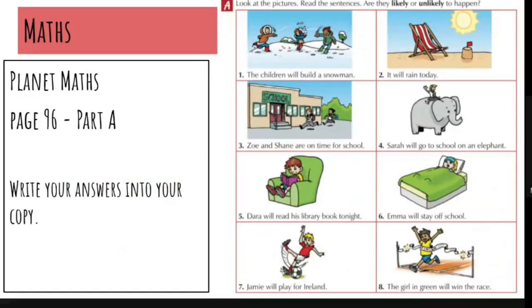Then you have to go on to page 96 and you're going to do part A. If you write in your copy, are these things likely or unlikely to happen? So likely means that they probably will happen. Unlikely means that they probably won't happen. So you just have to write question one, likely or unlikely. Question two, likely or unlikely. Okay, that's all you need to do.